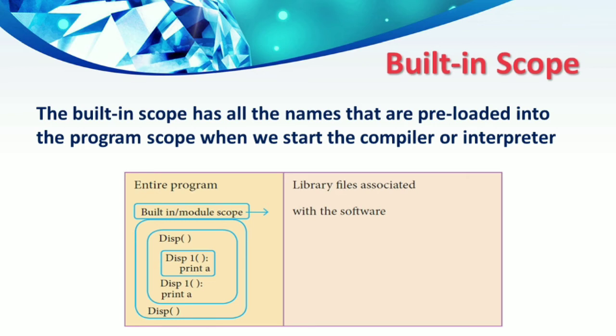Built-in scope has all the names that are preloaded into the program scope when we start the compiler or interpreter. Any variable or module defined in the library functions of a programming language has built-in or module scope — they are loaded as soon as the library files are imported into the program. We never need to import any module to access functions like `print` or `id`; these functions come along with the software as packages.